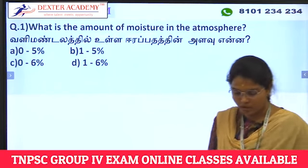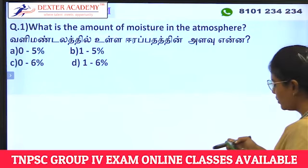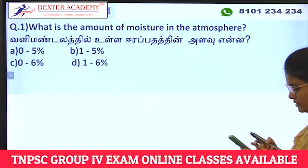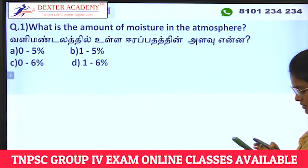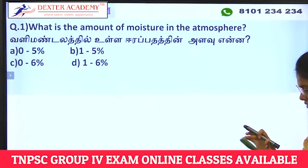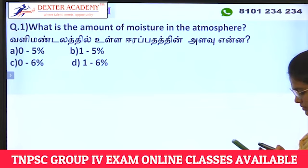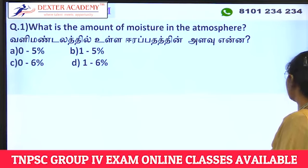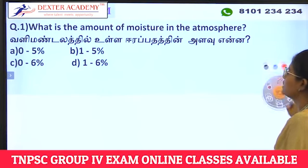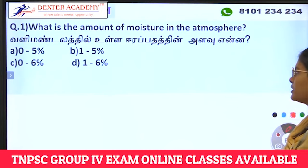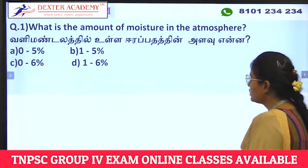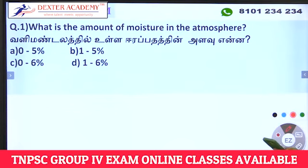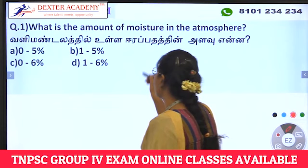What is the amount of moisture in the atmosphere? Option A: 0 to 5 percentage. Option B: 1 to 5 percentage. Option C: 0 to 6 percentage. Option D: 1 to 6 percentage.